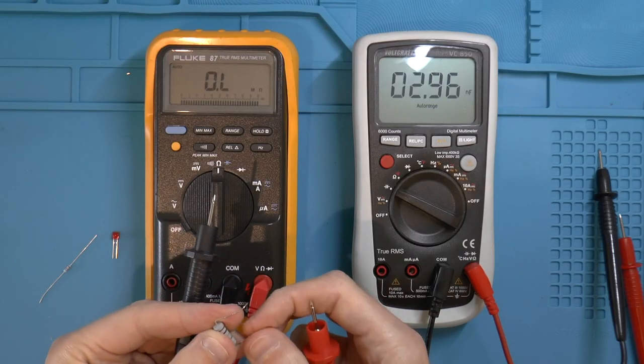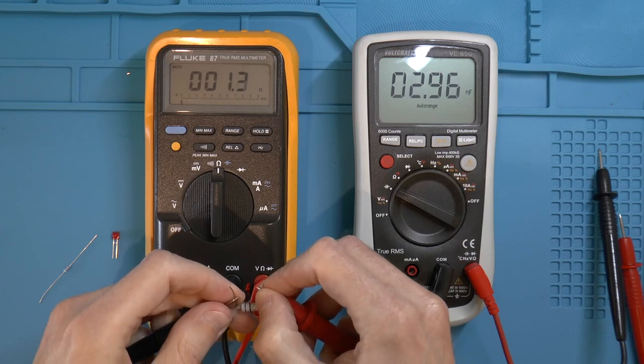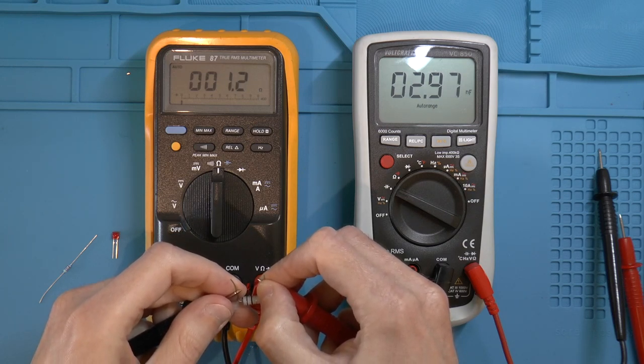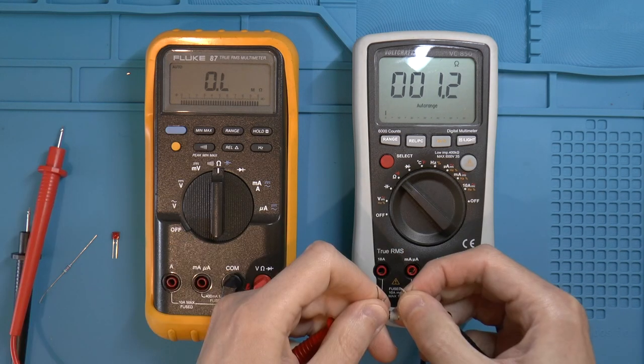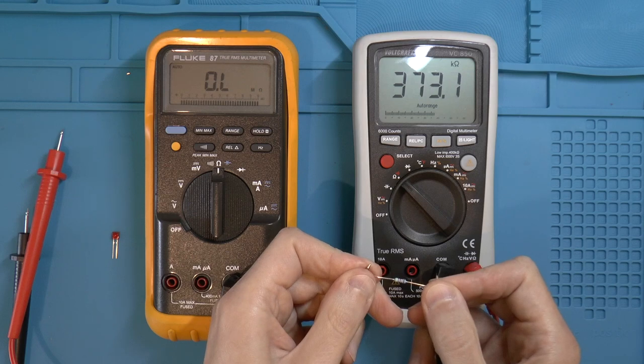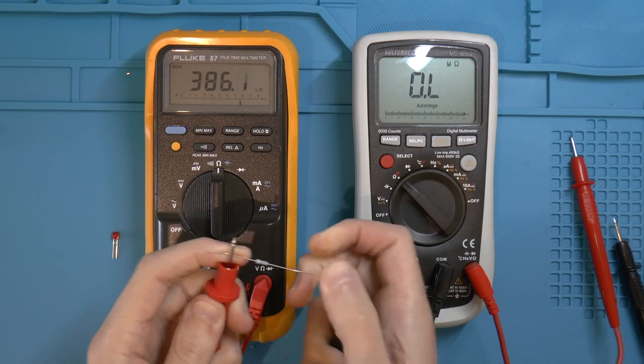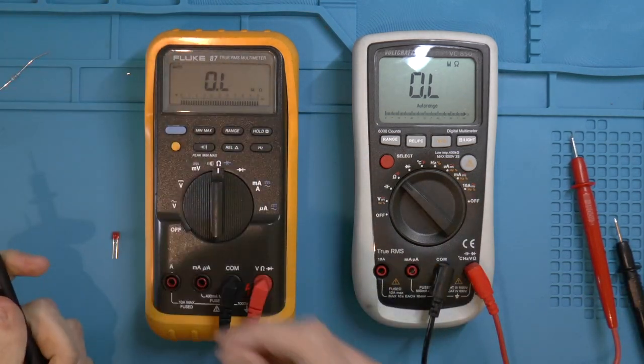Let's try resistance. Okay, 1.2 ohms on this one. Yeah, about the same on this one. 370K, 380. I mean, I don't work in high precision, so this is plenty good enough for me.